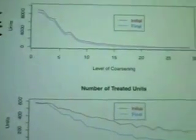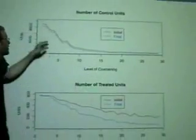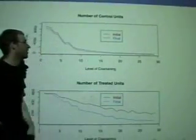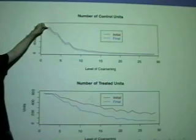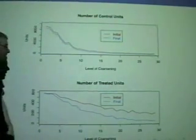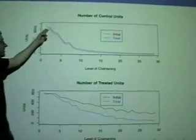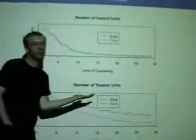So not surprisingly, as you make your matching more and more strict, you're losing a lot of your observations. Again, the red is before kicking out losers are matched themselves, blue is after. So pretty much everyone gets a match up here, then obviously we're losing more data.